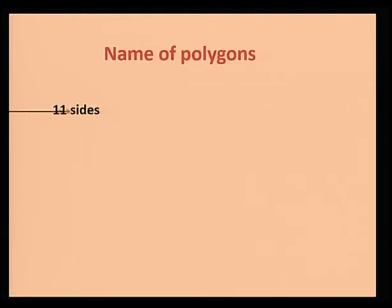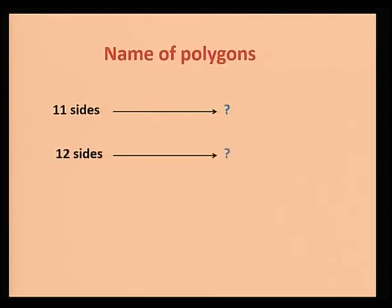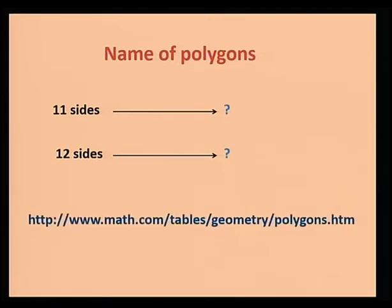Now, what about a polygon with eleven sides or twelve sides? Well, students, at grade seven level you are going to work with polygons having up to ten sides. In higher classes, you are going to work with polygons with more than ten sides. But if you want to know more about the names of polygons, you can consult the following website where you will find more about polygons and number of sides.